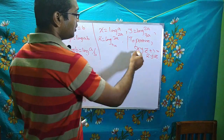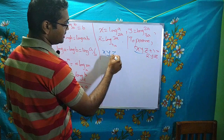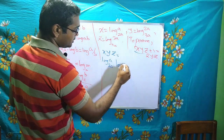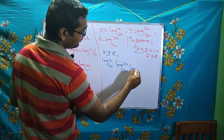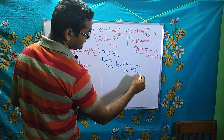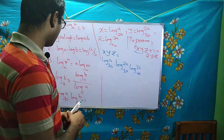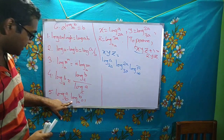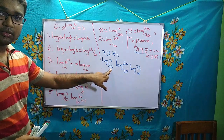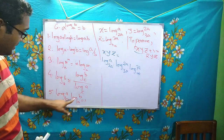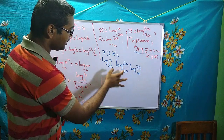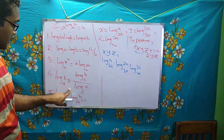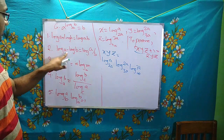Let us prove it. First, let us find xyz. We have x times y times z equals log a to base 2a times log 2a to base 3a times log 3a to base 4a. We cannot directly apply the product formula because the bases are different. So let me introduce a new base c and use the change of base formula, writing each logarithm as a ratio.